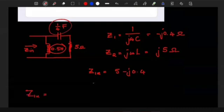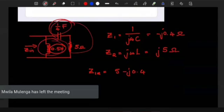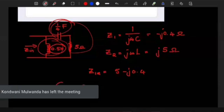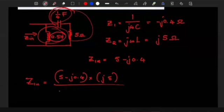Z1 we are looking for is going to be, since they're going to be in parallel, this will be in parallel with this. So now it's going to be the product of the ones in parallel, that's the 5 minus j 0.4 multiplying the j5 over the sum, 5 minus j 0.4 plus j5.